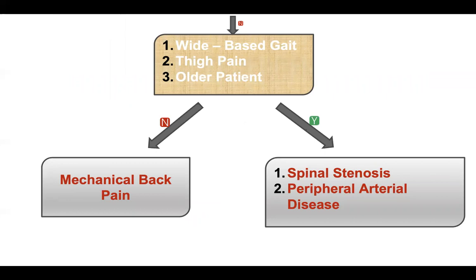If the patient is older, thigh pain might be due to spinal stenosis or a vascular cause. If the patient has a wide-based gait, thigh pain, or is older, then think about spinal stenosis, and also peripheral arterial disease. In this case, perform ABPI and vascular examination to look for peripheral arterial disease, and ask specific questions for intermittent claudication and night pain.